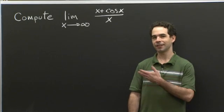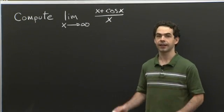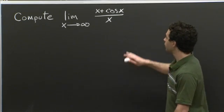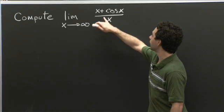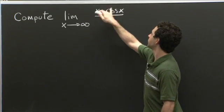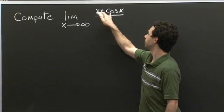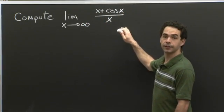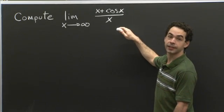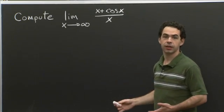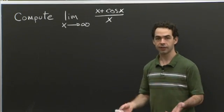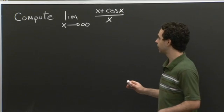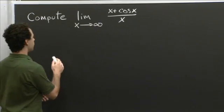Welcome back. Hopefully you had some fun working on this limit. Let's go through it and see what happens when we try to apply L'Hôpital's Rule. The first thing to notice is that as x goes to infinity, x plus cosine x — well, cosine x is small, between minus 1 and 1, and x is going to infinity. So the top is going to infinity and the bottom is going to infinity. So this is an infinity over infinity indeterminate form, a context in which we can try to apply L'Hôpital's Rule.